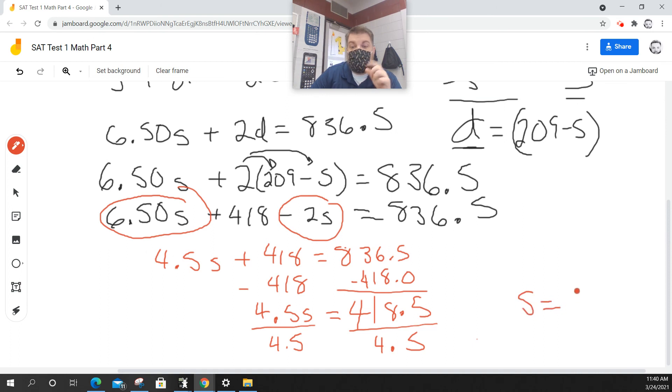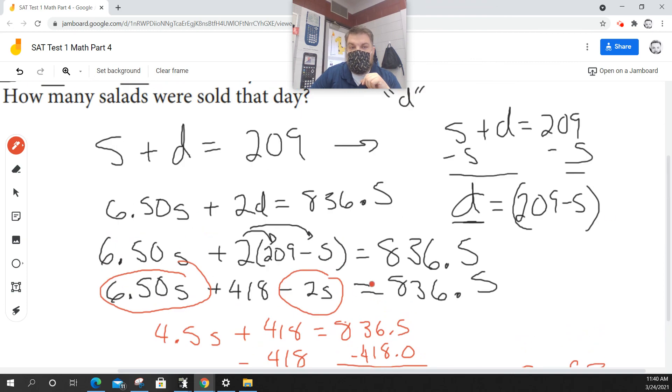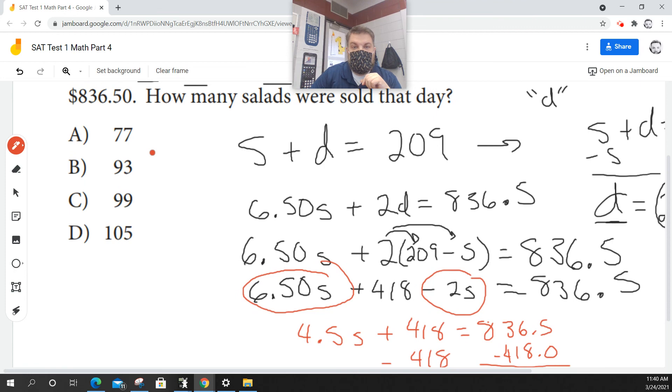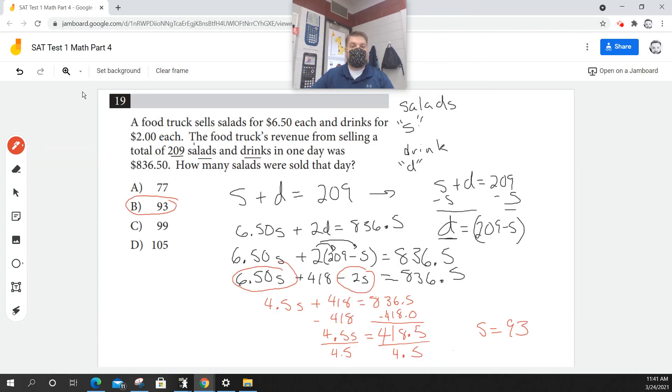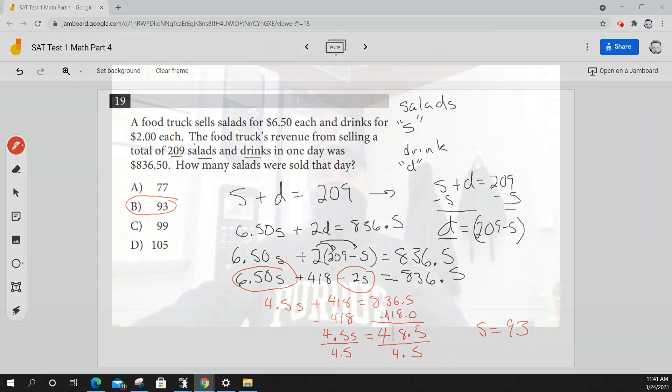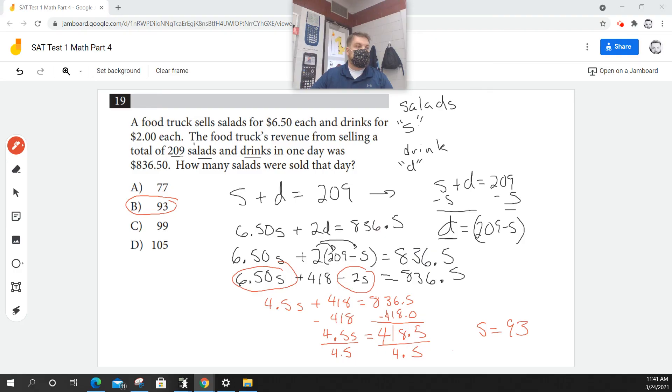So what does that tell me? Well, it tells me that I sold 93 salads. So we've got to go back and read the question, and the question does say how many salads. B is the correct answer. Let me zoom out so you guys can see everything. Give you a chance to finish writing everything down. Does anybody have any questions on that?